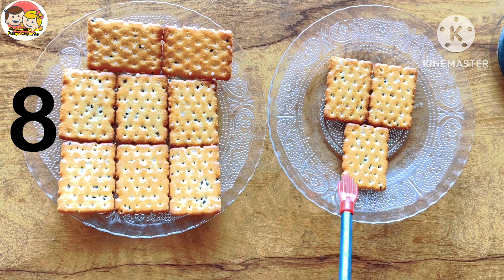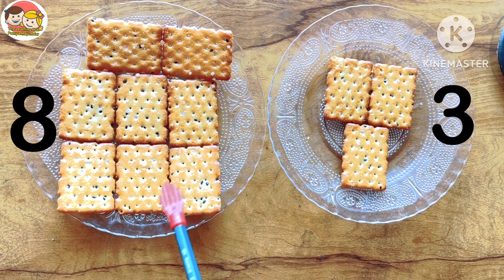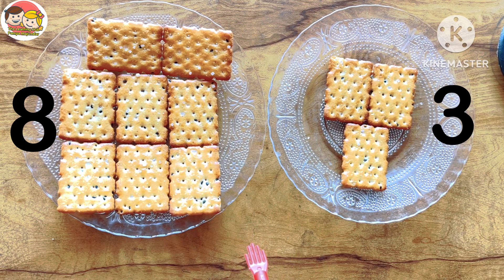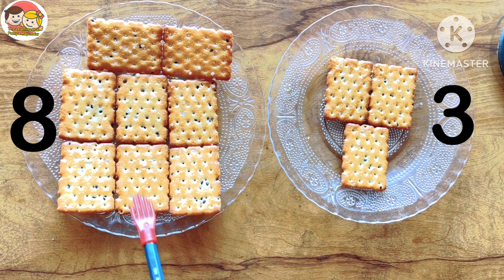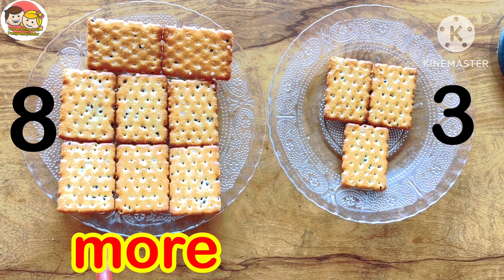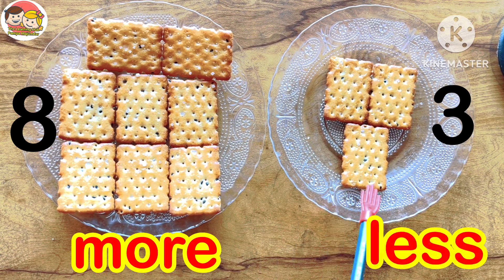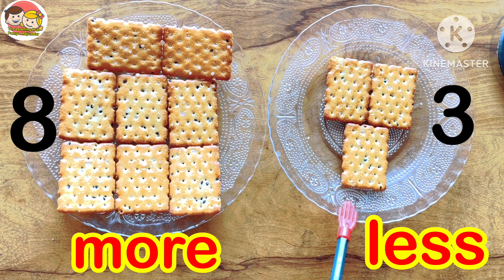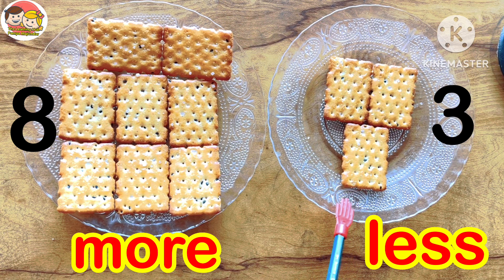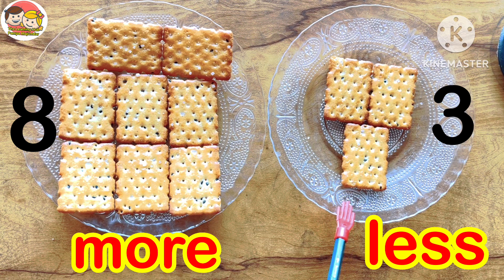Here we have three biscuits. So which plate has large number of biscuits? Yes, this one. So this is more. More. And this is less. Less. The right side plate has small number of biscuits. So this is less.